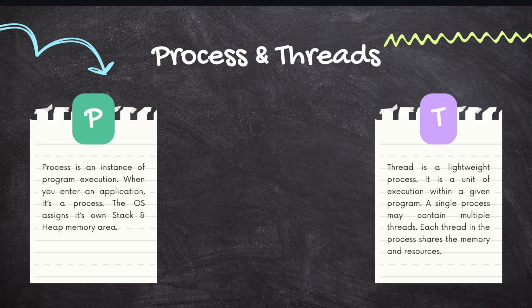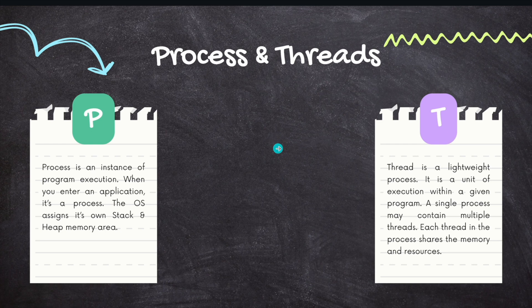Now let's understand what is a process and a thread. A process is an instance of program execution — when you enter an application, it's a process. The operating system assigns its own stack and heap area. A thread, on the other hand, is a lightweight process; it is a unit of execution within a given program. A single process may contain multiple threads, and each thread in the process shares the memory and the resources of the parent process.